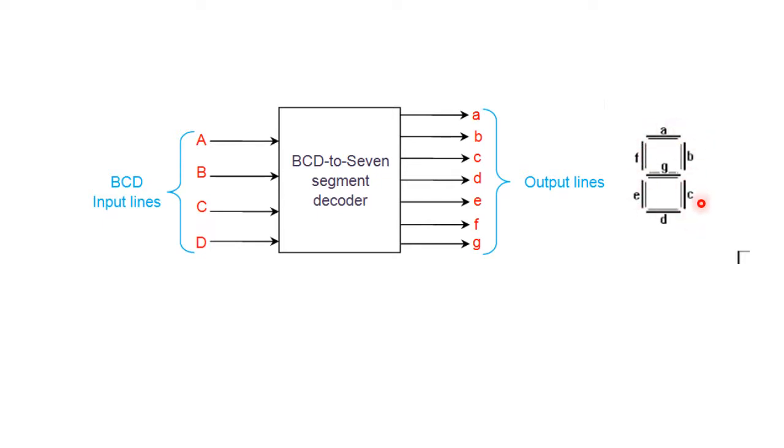To display 0, these ports namely A, B, C, D, E, F are going to be 1 and G is going to be off, meaning it will be deactivated. So it gives us the display of 0. Similarly, we can proceed up to the last digit as 9. This is called BCD to 7-segment.